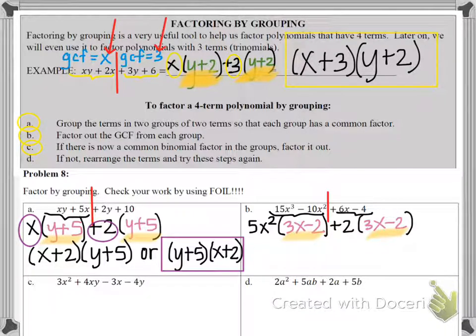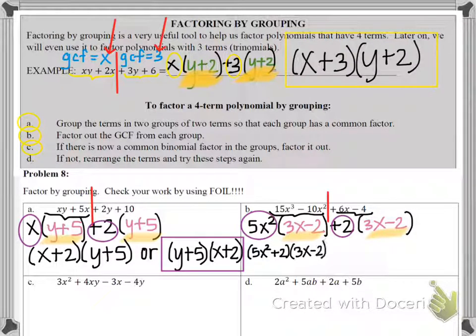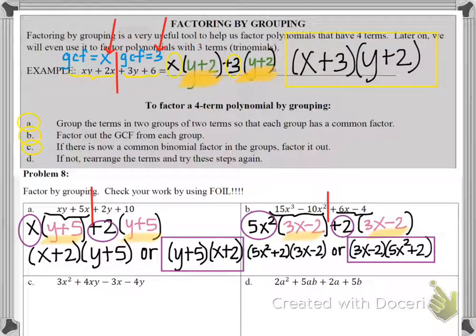So this tells me that I do have a common binomial factor. So now I'm going to factor it out. By factoring it out, I take the two GCFs, and they form my first binomial. So 5x squared plus 2, and then the matching binomial, 3x minus 2, makes my second binomial. Or, of course, you can switch the order if you want. 3x minus 2 times 5x squared plus 2.